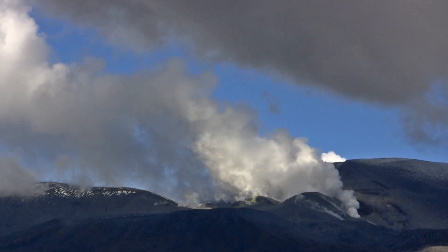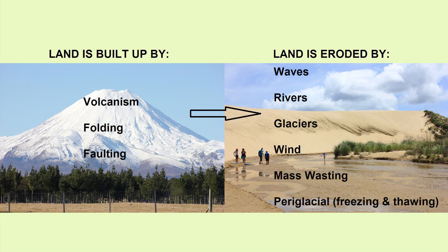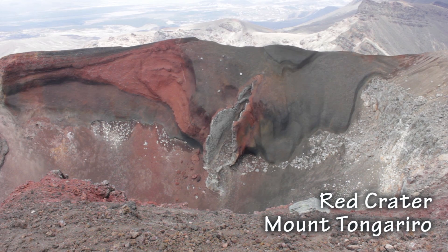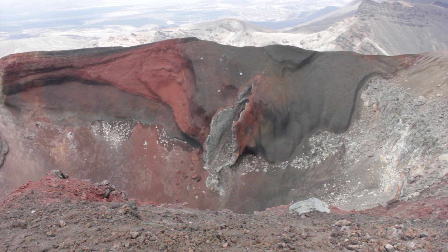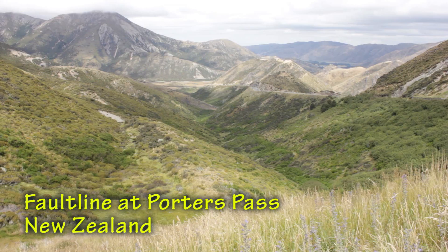Some processes build landforms up, while others modify them as can be seen in the diagram on screen. The Earth's landforms are built up by the processes of volcanism, folding and faulting.